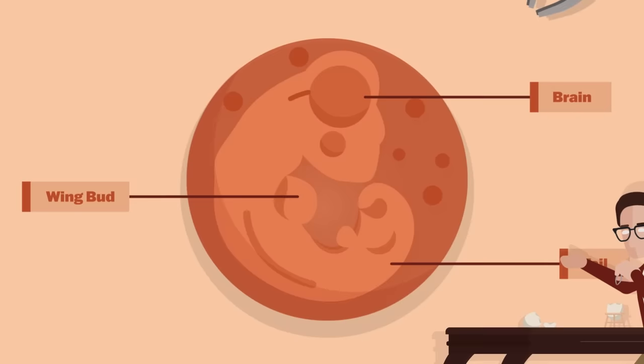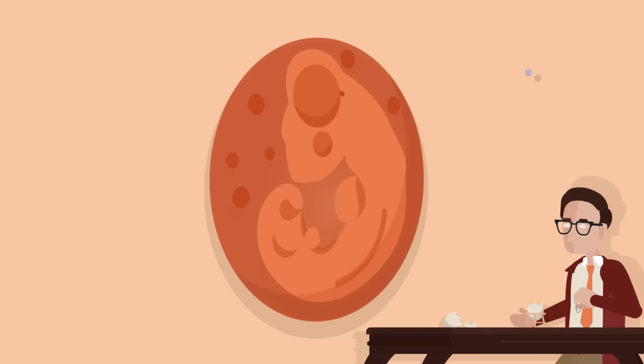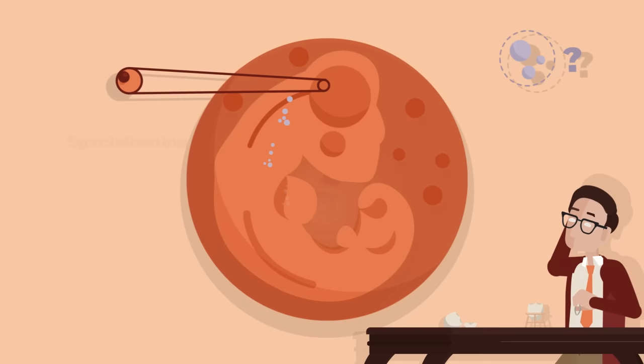By removing the wing buds from chick embryos, he had prevented the development of nerves which would have connected the brain to the wings. He believed that wing buds produced some kind of substance necessary for brain cells to acquire specialized functions.